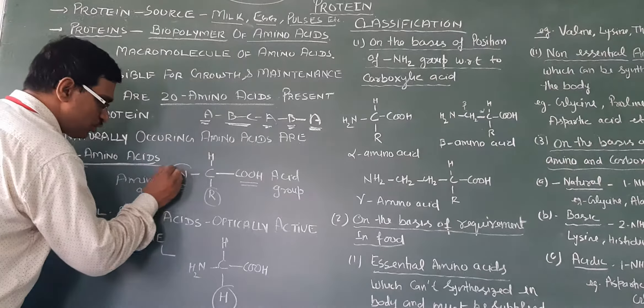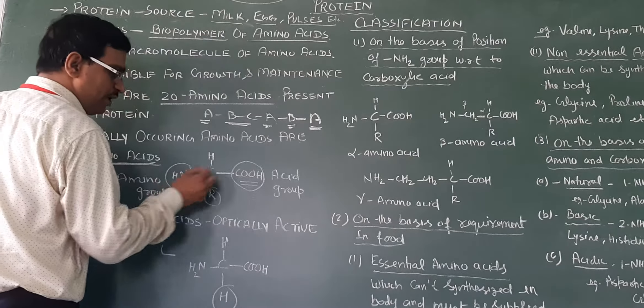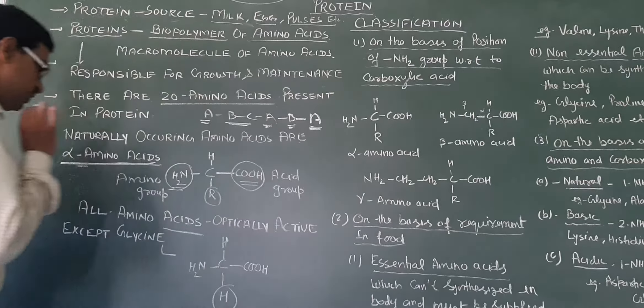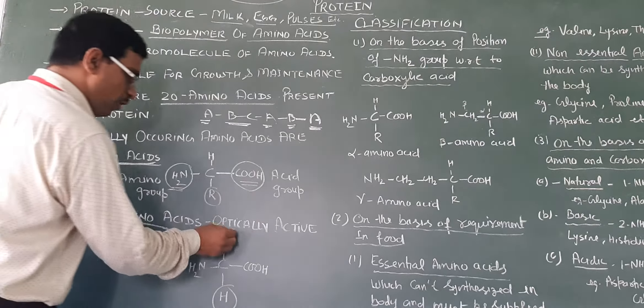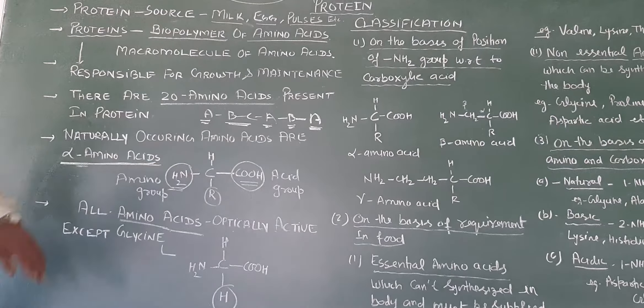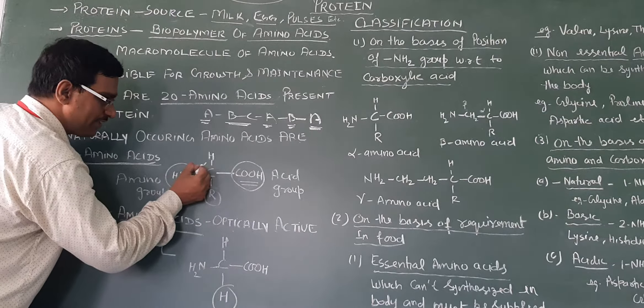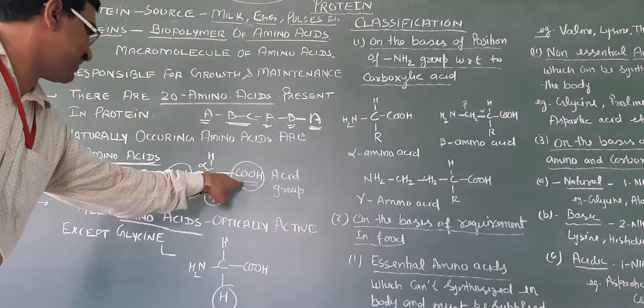Alpha amino acids contain one amino group and one carboxyl group. The carbon adjacent to the carboxyl group is the alpha carbon. When NH2 is attached to this alpha carbon, it is called alpha amino acids.